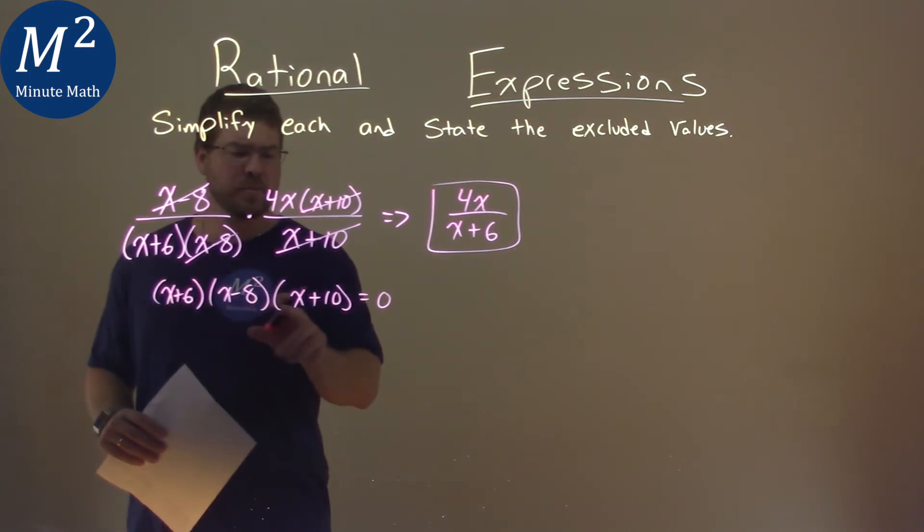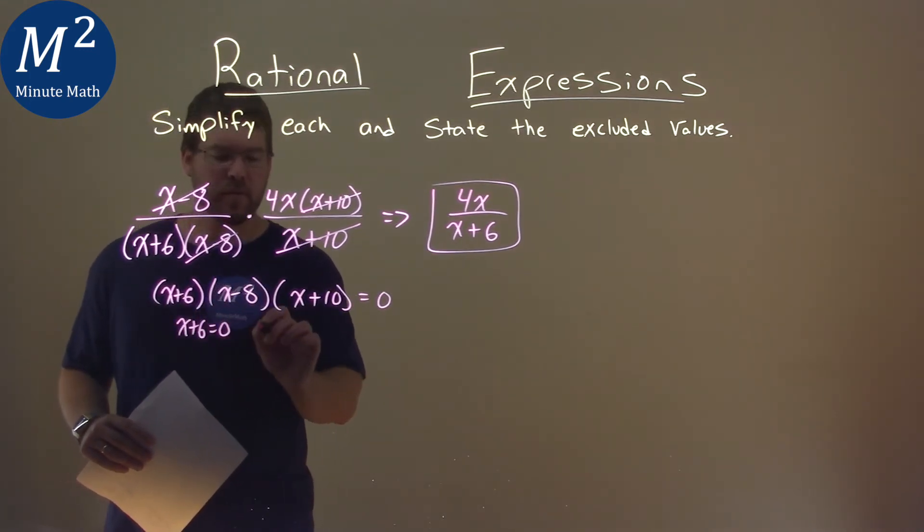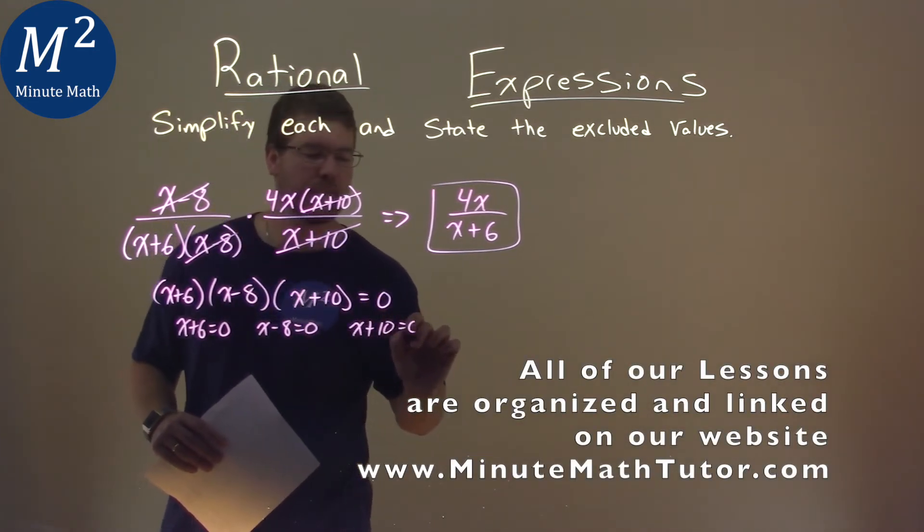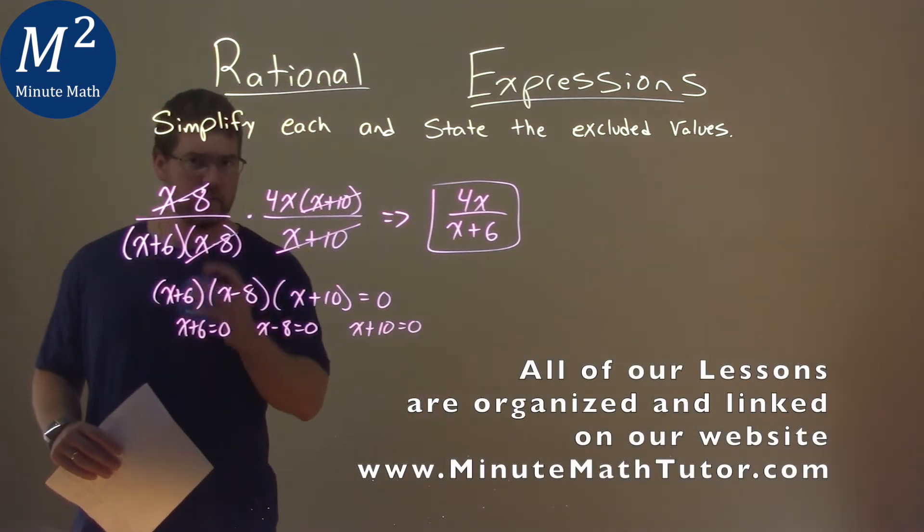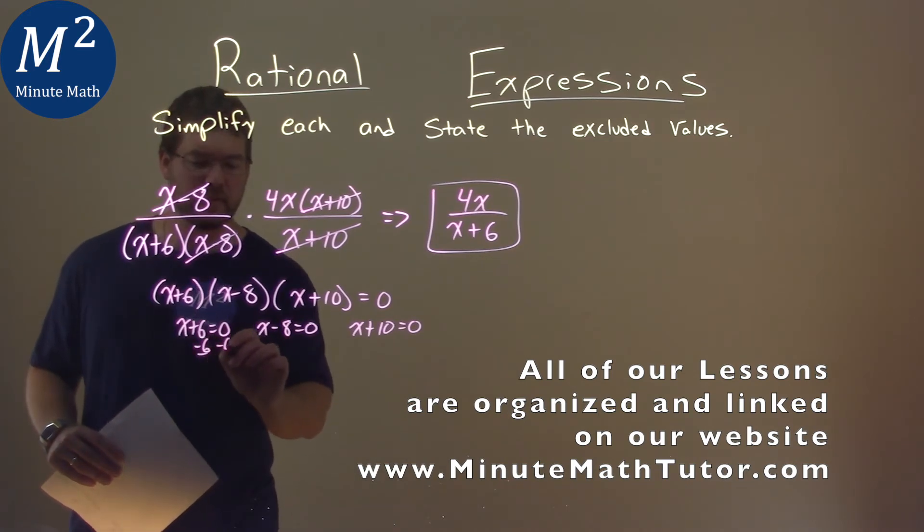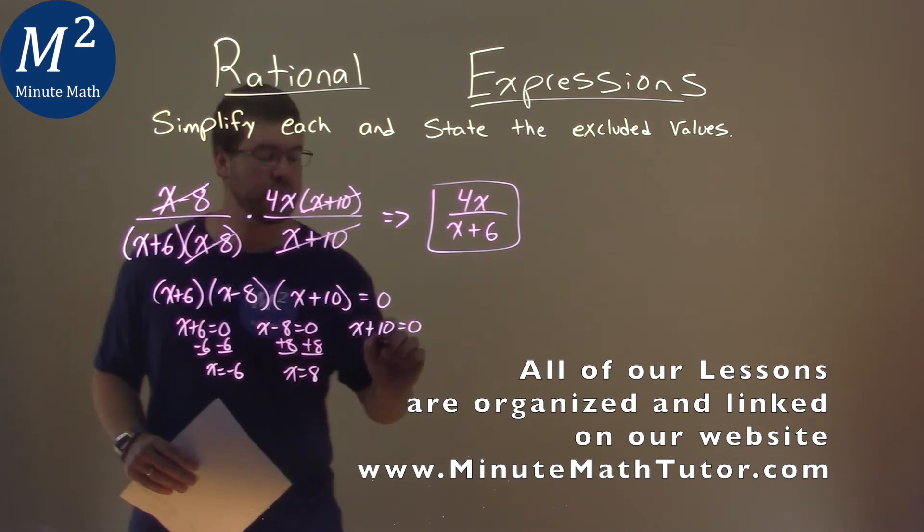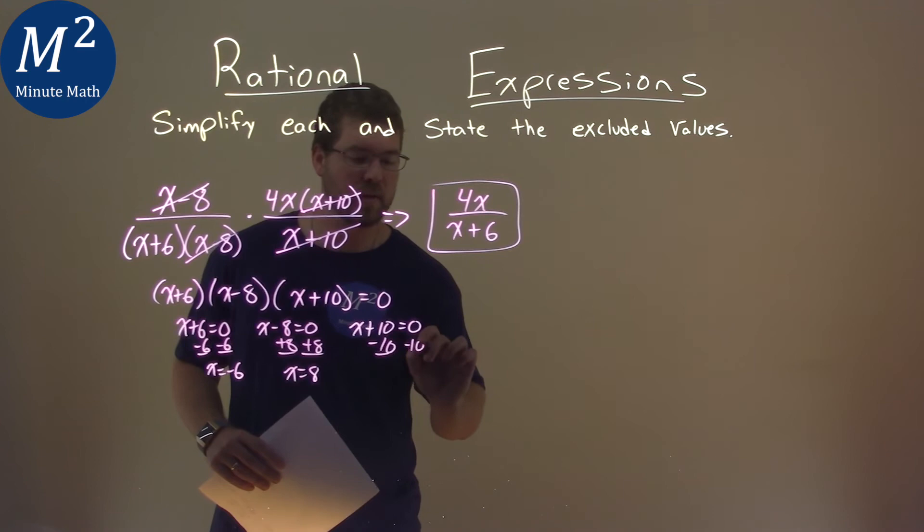Well we can set each part individually equal to 0. x plus 6 equals 0, x minus 8 equals 0, and x plus 10 equals 0. And we're going to solve each one. Subtract the 6 to both sides and x equals negative 6. Add an 8 to both sides and x equals positive 8. Subtract a 10 to both sides and x equals negative 10.